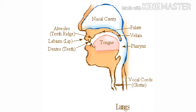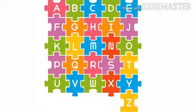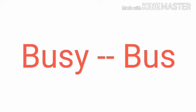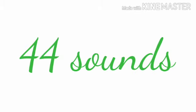A letter of the alphabet represents a particular sound. However, in the English language, a letter of the alphabet can represent more than one sound — the same letter can be pronounced differently in different words. For example, take the two words 'busy' and 'bus.' The letter 'u' appears in both words, but in 'busy' it sounds like 'i' — busy — while in 'bus' it sounds like 'a' — bus.